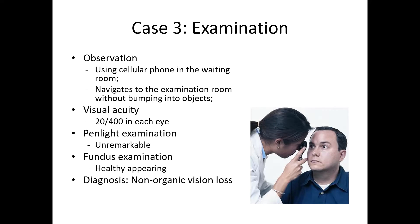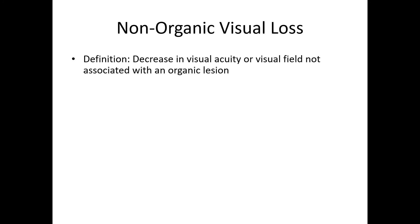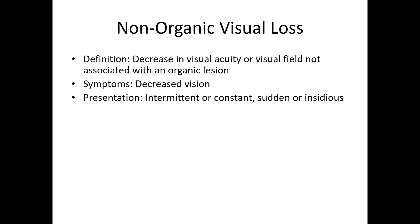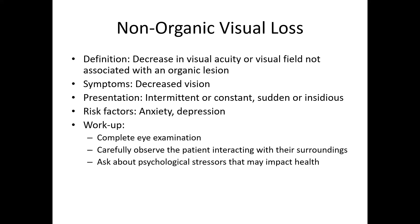The practitioner thinks about non-organic vision loss. Non-organic vision loss is a decrease in visual acuity or visual field not associated with an organic lesion. Symptoms are decreased vision, and the presentation can be intermittent or constant, sudden or insidious. The risk factors are anxiety and depression. A workup must include a complete eye examination, careful observation of the patient interacting with their surroundings, and an empathetic, carefully worded inquiry about psychological stressors that may impact health. Treatment is typically reassurance and a psychological evaluation when appropriate, though every practitioner must have a low threshold for considering organic disease, as there are cases of non-organic vision loss with underlying organic disease, and one never wants to miss this.